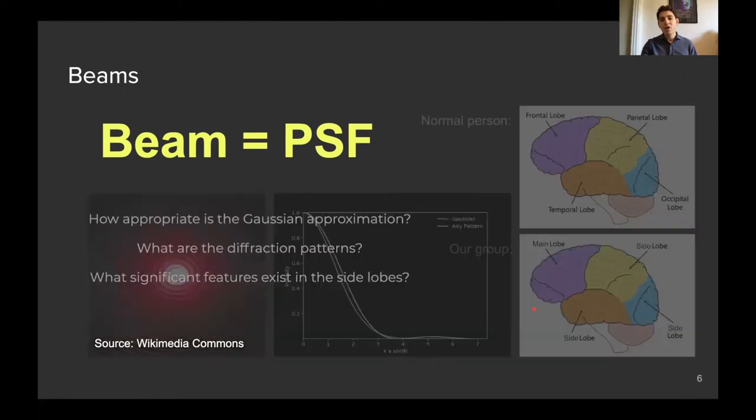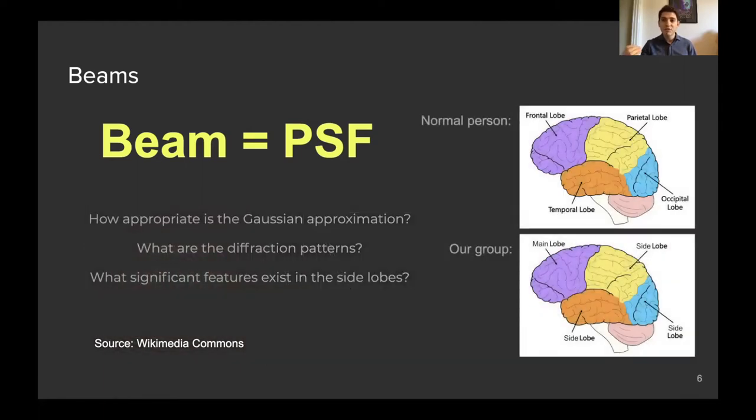However, the question becomes, okay, how good is it? How appropriate is the approximation? Do we need to go further? What happens if we don't? And what kind of diffraction patterns do we have is an intimately linked question to how appropriate the Gaussian approximation is. The other question is about the side lobes, which are substantial deviations from that Gaussian or Airy pattern, like local maxima far away from the main beam. And the morphology of side lobes, the amplitude of side lobes, is a rich subject of research.